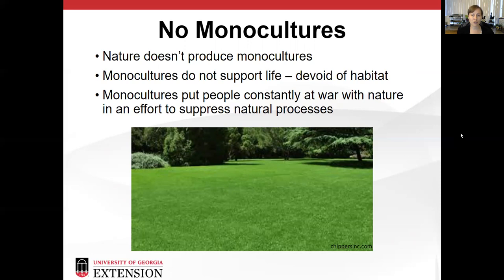In nature, there are no monocultures. Nature doesn't produce monocultures. What you see in a perfectly uniform lawn is clearly a convention of man, because you've never seen this in nature. There may be fields of grass, but they're going to be different species intertwined together with wildflowers or other things. This is our idea of beauty, not nature's. Part of the reason that nature doesn't produce monocultures is because monocultures do not support life — they're devoid of habitat. They're not healthy for the soil or the microbes in the soil, and they're not healthy for wildlife or insects.